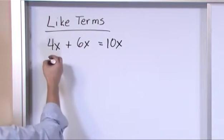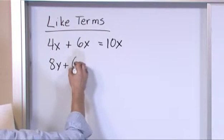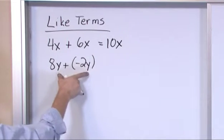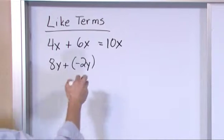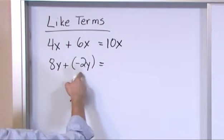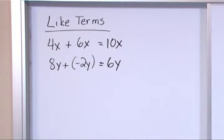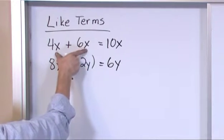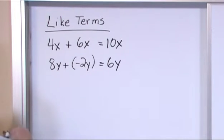Another example would be, let's say 8y plus, I'm adding to it let's say negative 2y. Well see this term and this term both have a y. They look exactly the same, just the number in front is different. So I can add them together. 8 plus negative 2 is 6, but I still have to keep that y along for the ride because we're still talking about whatever it is y represents. In each case this is like terms because the x looks the same. These are like terms because the y's look exactly the same.